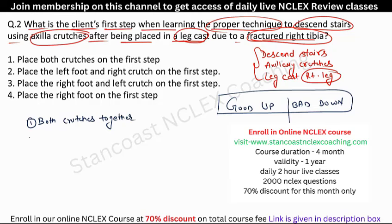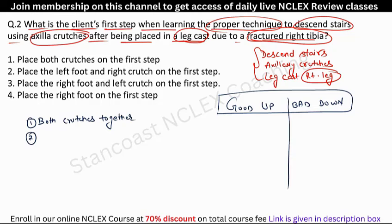When using axillary crutches on stairs, we keep both crutches together at all times. The crutches replace the affected limb in supporting body weight. The crutches are always moved just before the affected leg. For descending stairs — 'bad down' — the bad leg is placed first, the good leg second. The crutches move just before the affected (bad) leg.